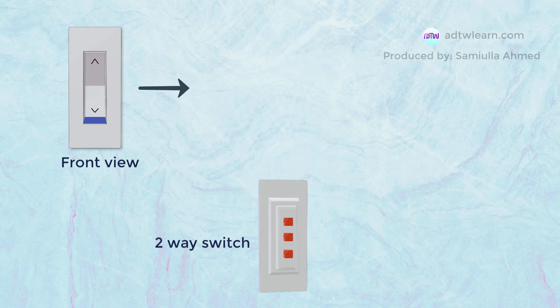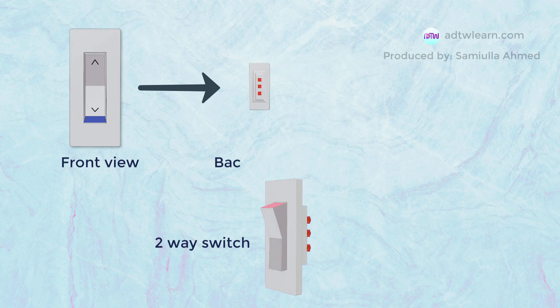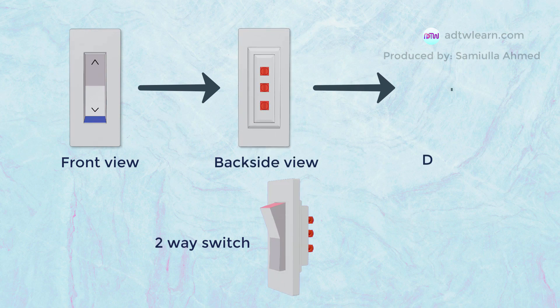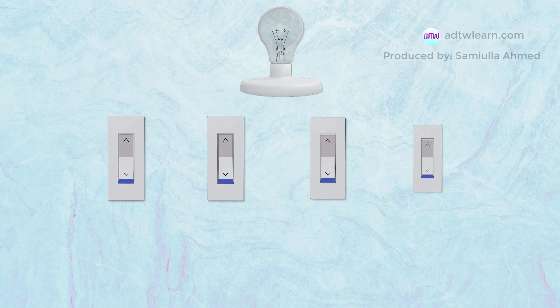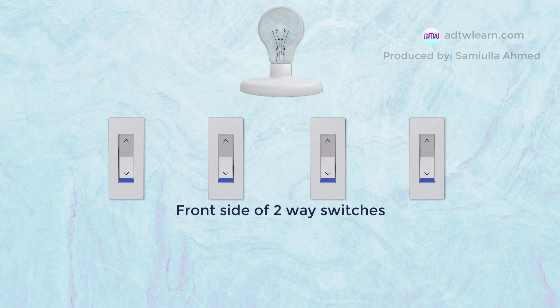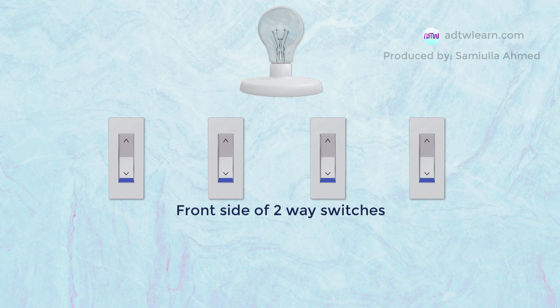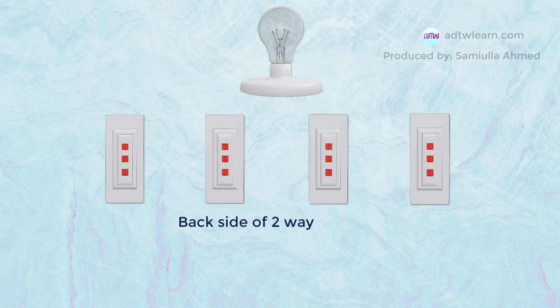This is the front side of the switch. This is the back side of the switch. This is the diagram showing the working of the switch inside. Let us see the wiring.